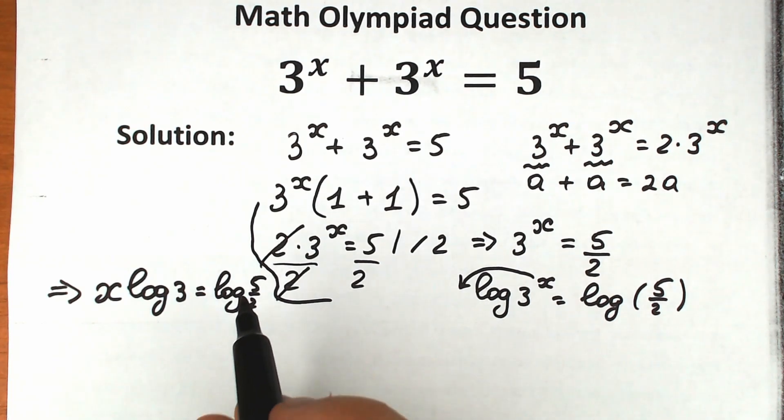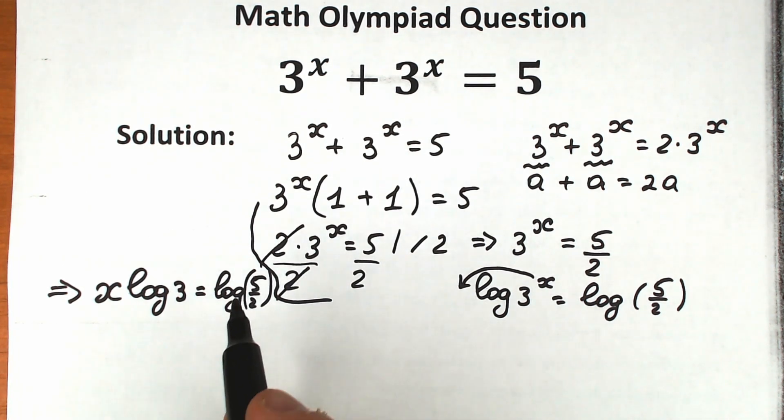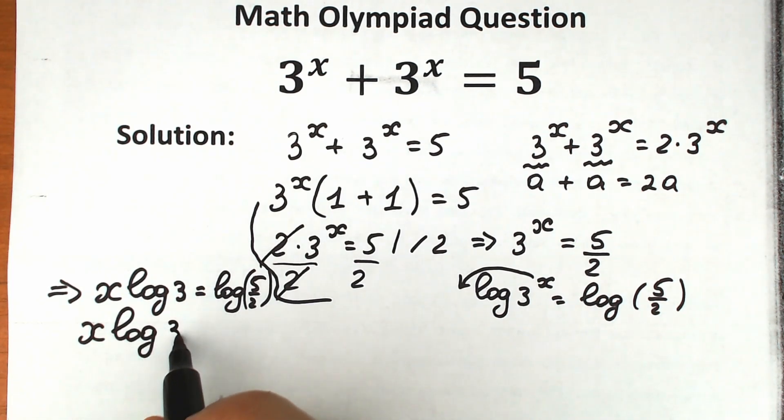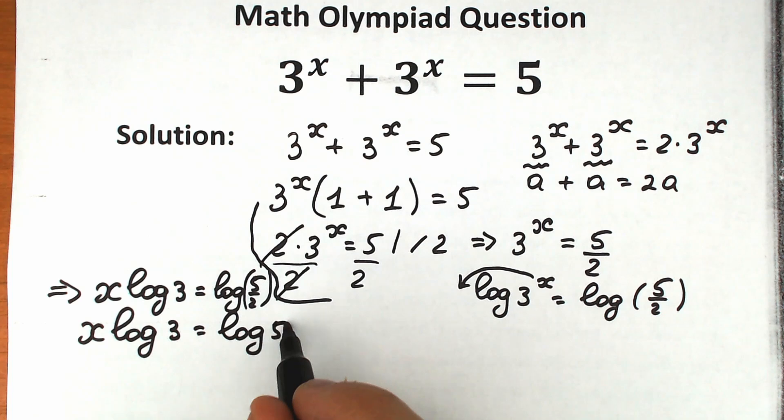Of course, log 5 half we can easily write it as a subtraction. Because right here we have a division, so according to log property, we can easily write it as log 5 minus log 2. So we have x log 3 equal to log 5 minus log 2. Right now the final step,